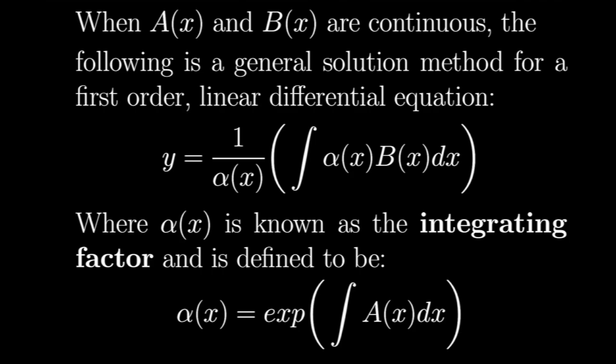For our second definition, I'm going to give you a general solution method for all first order linear differential equations, by way of the following formula. When a of x and b of x are continuous, the general solution is y is equal to 1 over alpha of x times the integral of alpha of x times b of x dx. Alpha of x is known as the integrating factor, defined as the exponential of the integral of a of x dx — that is, e to the power of that integral. Now that we've laid our groundwork, let's get into some examples using these definitions.